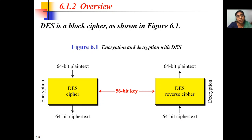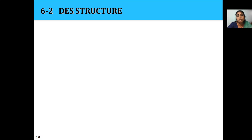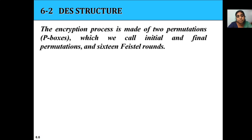In the reverse process, whenever we take the ciphertext, we apply the same 56-bit key and achieve the plaintext at the decryption end. Coming to the structure of DES: initially the structure contains two permutations or two P-boxes — that is, the initial permutation and the final permutation. The number of rounds in the DES algorithm is 16 rounds.